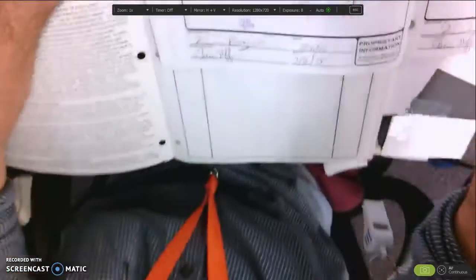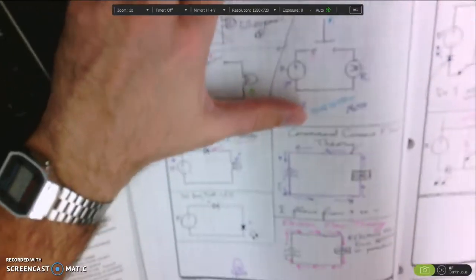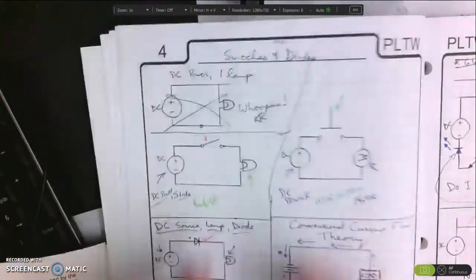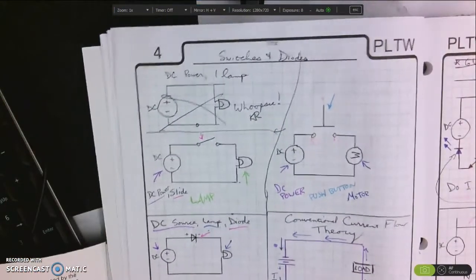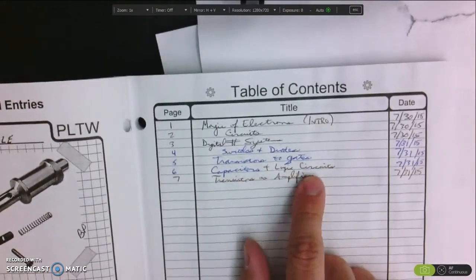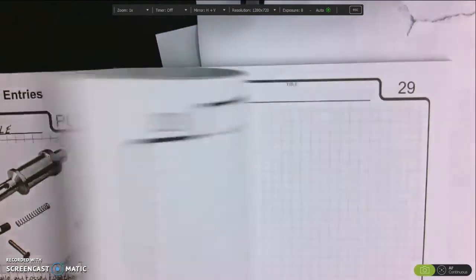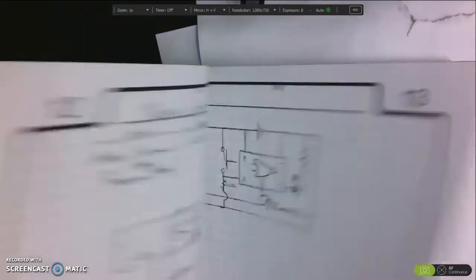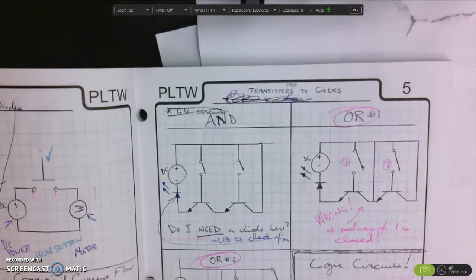So those are the components of an engineering notebook. Once you finish that page you get it witnessed and then you would go back to your index and you just fill it in. Over time it'll catalog all of your ideas and you'll be able to submit it when you go for a patent.